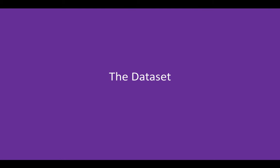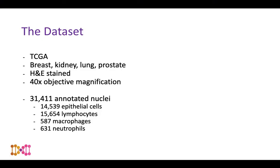The dataset provided by the challenge organizers covered organs including breast, kidney, lung, and prostate. All images were H&E stained — hematoxylin and eosin — at 40x objective magnification, with around 31,000 annotated nuclei in total. There were around 15,000 epithelial and lymphocyte nuclei and around 600 macrophages and neutrophils, giving quite a significant class imbalance.